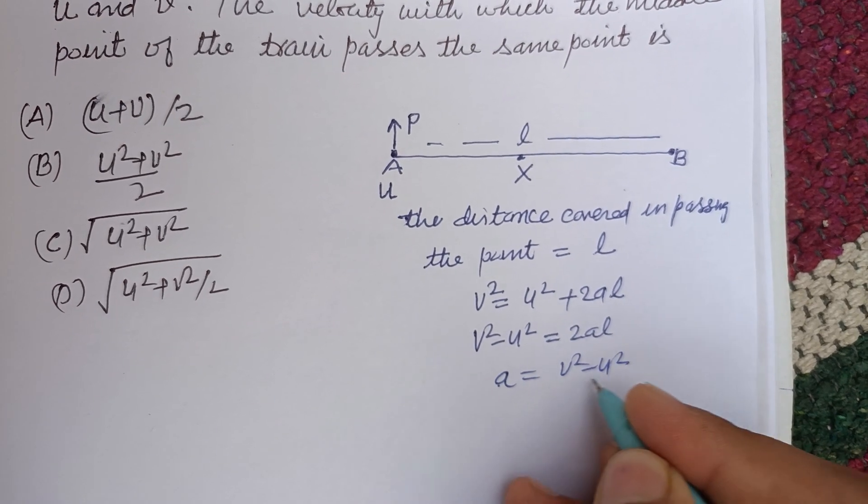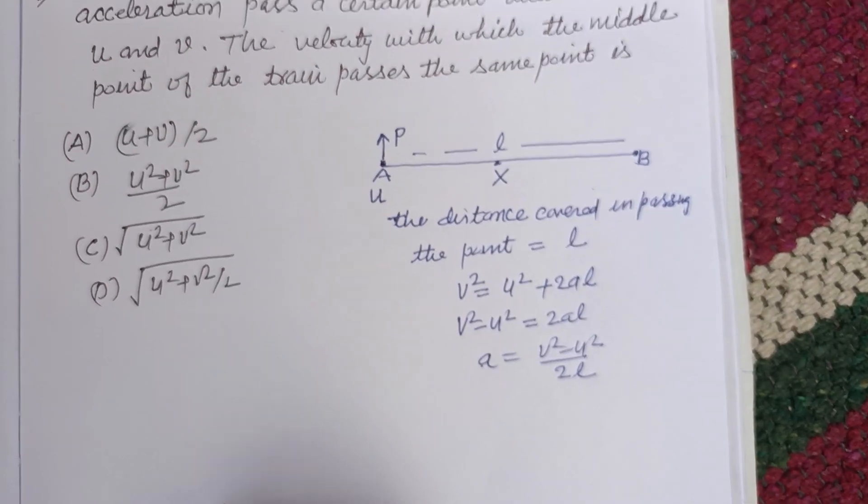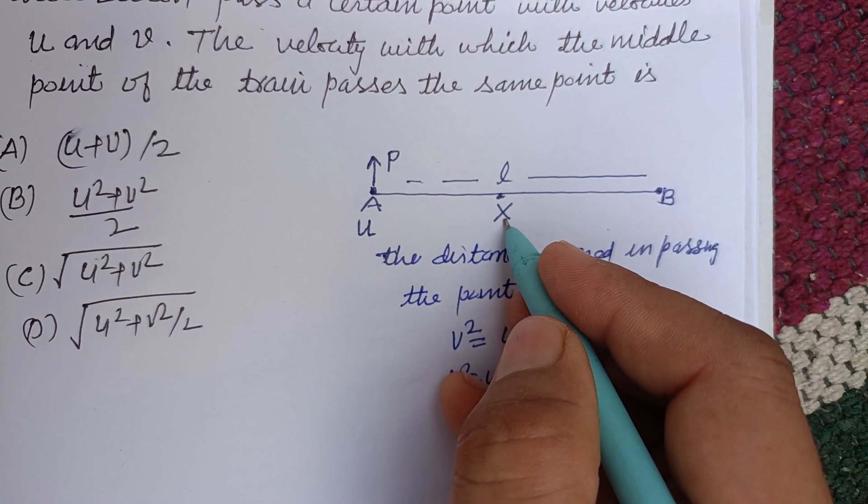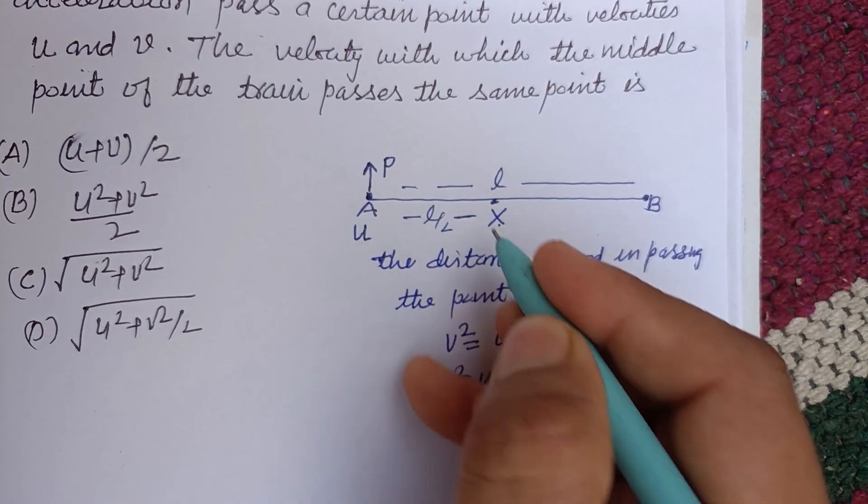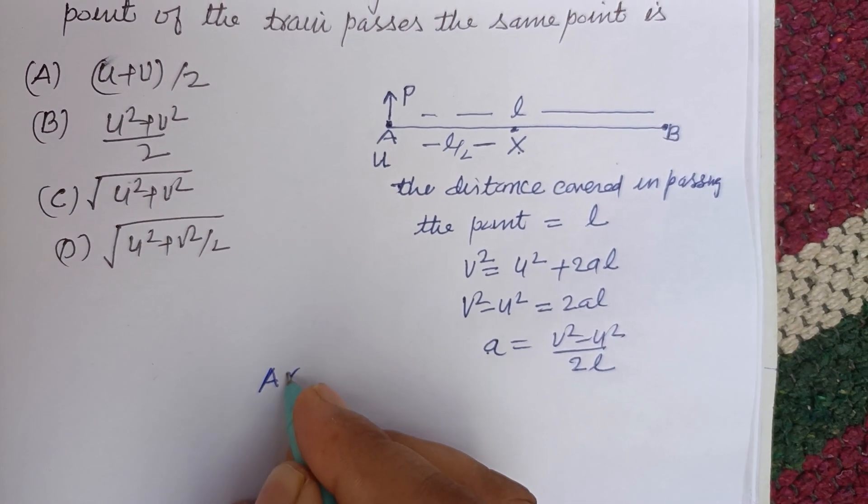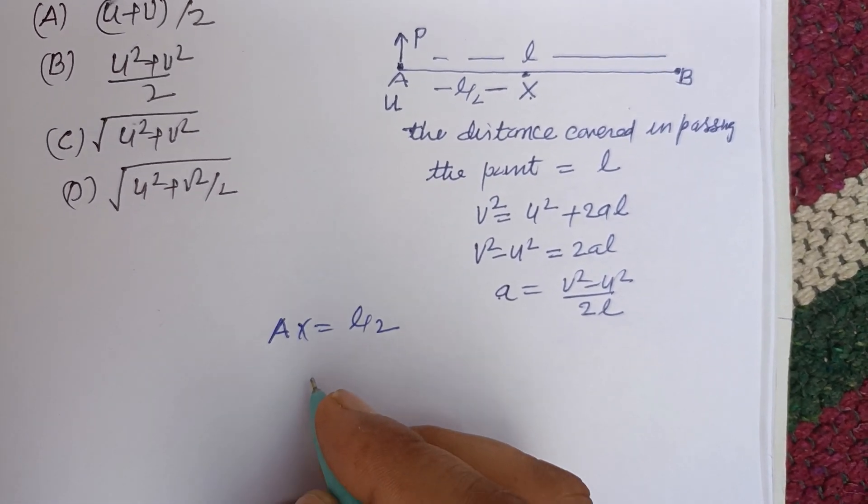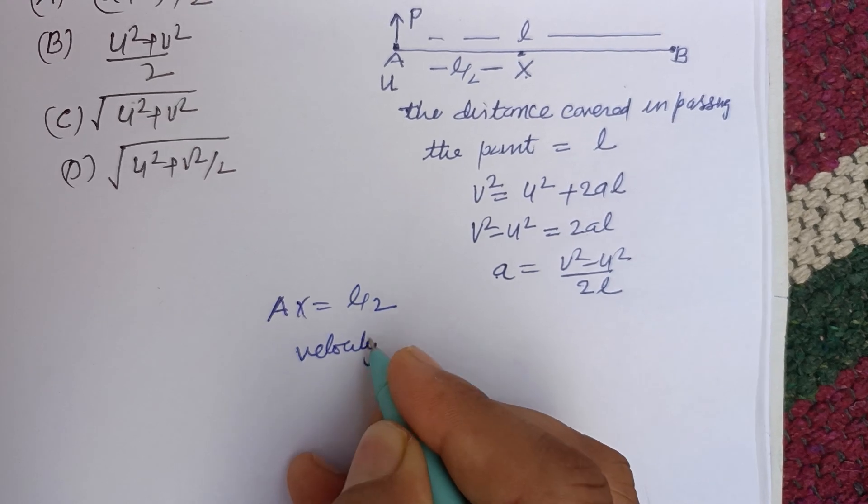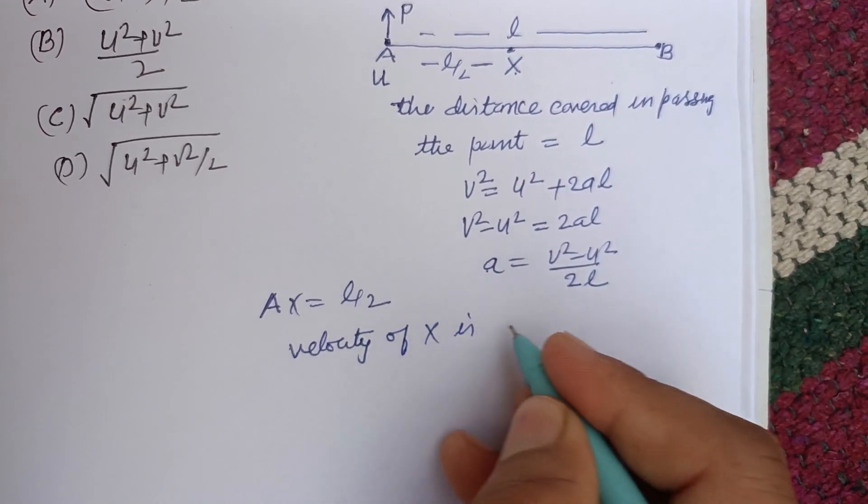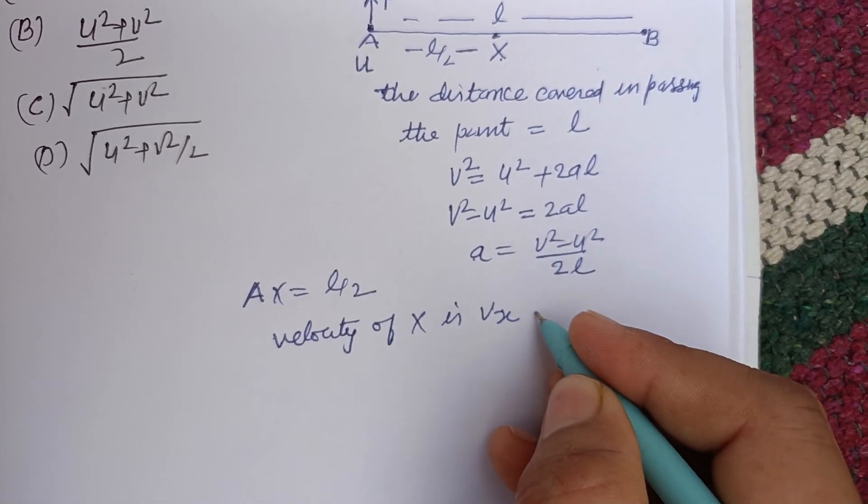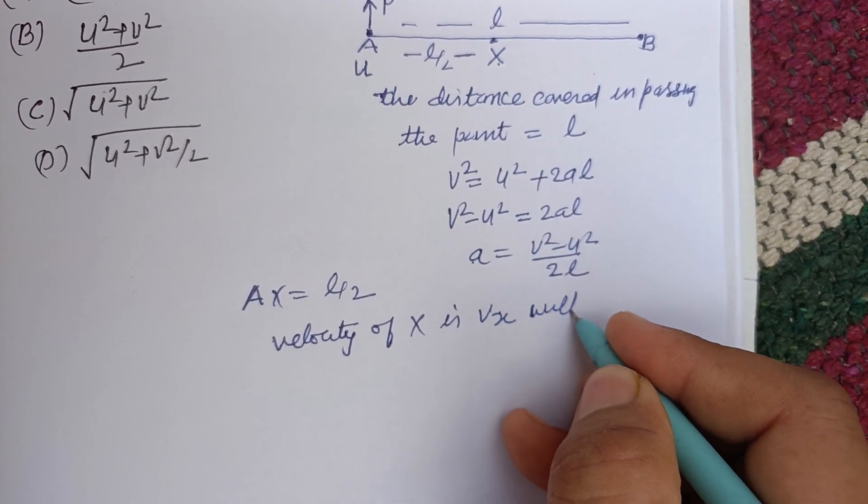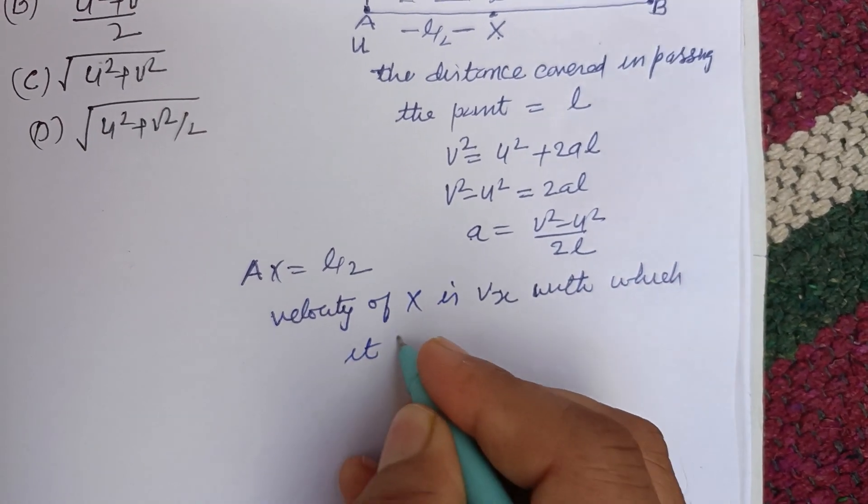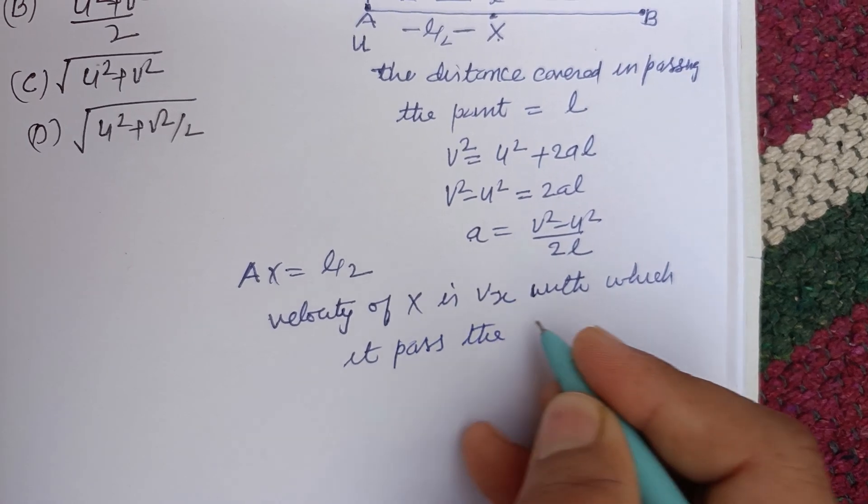Now let this point X which is the midpoint, so this is L/2. AX is L/2, and velocity of X is Vₓ with which it passes the point P.